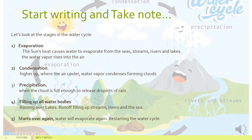So let's start writing and take notes. Let's look at the stages of the water cycle. The first stage is evaporation. The sun's heat causes the water to evaporate from seas, streams, rivers, and lakes. The water vapour rises into the air, turning into liquid cloud droplets.